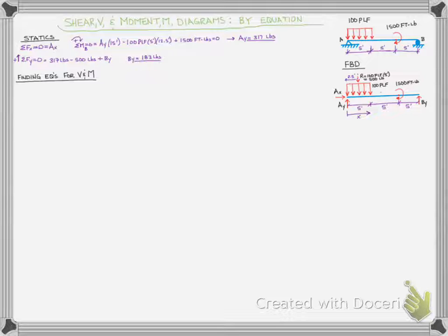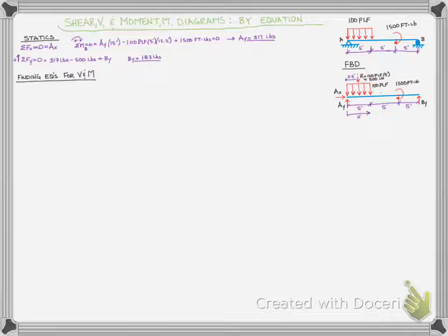Our beam has a uniform load in the first five feet, no load between five feet and ten feet, then an applied moment, and then no load until the roller at B, where we have the reaction BY which has already been solved for. The resultant shown on the free body diagram is 500 pounds — 100 pounds per lineal foot times five feet — acting at the centroid, two and a half feet from A.